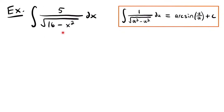Welcome back. Let's start with this example. We have the integral of 5 divided by the square root of 16 minus x squared times dx. To solve this integral, we're going to need to use the integration rule for the arc sine function, or the inverse of the sine function.